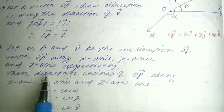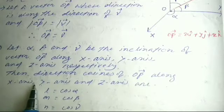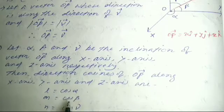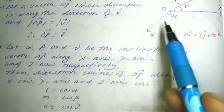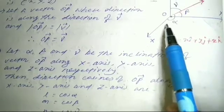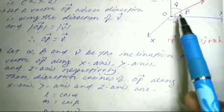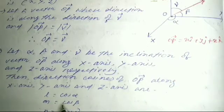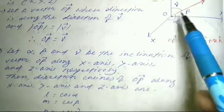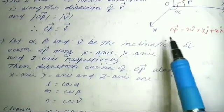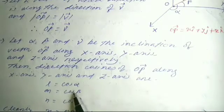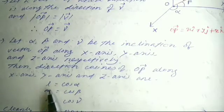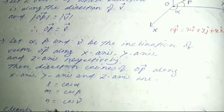From the diagram, the direction cosines of the OP vector along x-axis, y-axis, and z-axis are: l equals cos alpha, m equals cos beta, and n equals cos gamma. So the direction cosine along x is l = cos alpha, along y-axis is m = cos beta, and along z-axis is n = cos gamma.